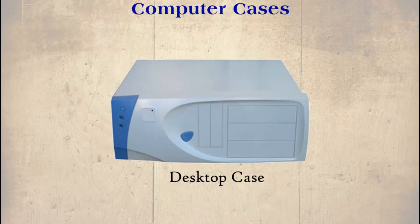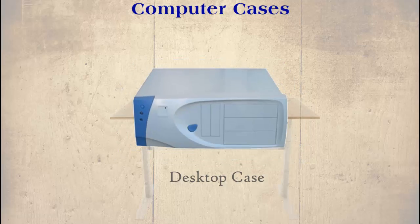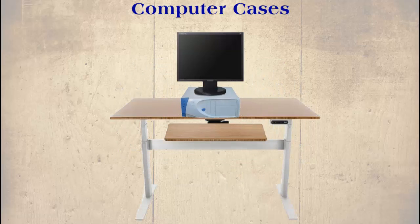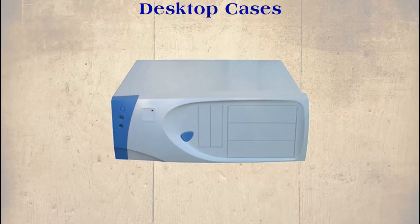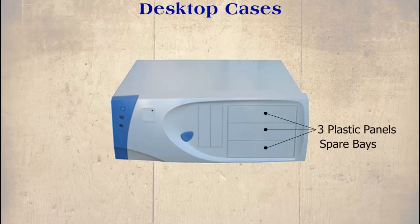The desktop case was once very popular. An advantage of this is that it can be placed underneath the monitor on the desk. Most cases have common parts. Here we shall have a quick look at what they are and how they vary. Here we can see three plastic panels called spare bays. Most cases have these but we should see how the number of these change from case to case. These are removed when other devices are fitted.